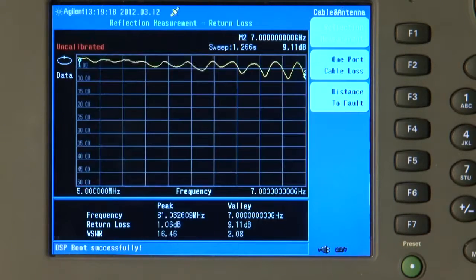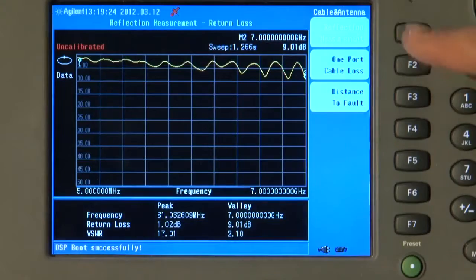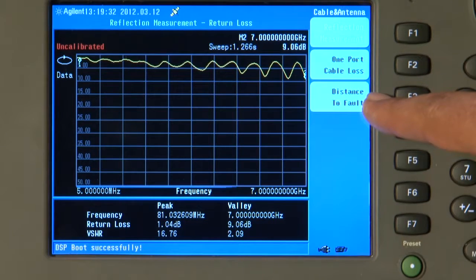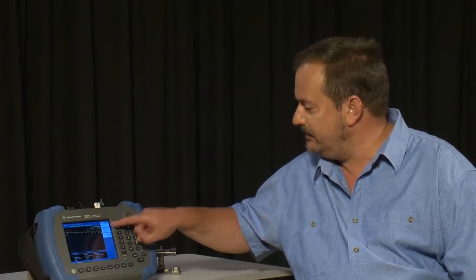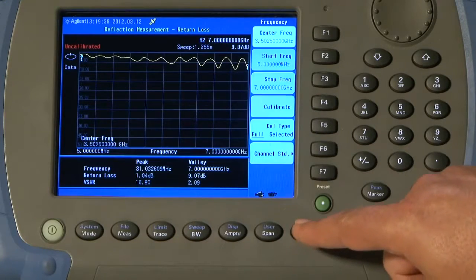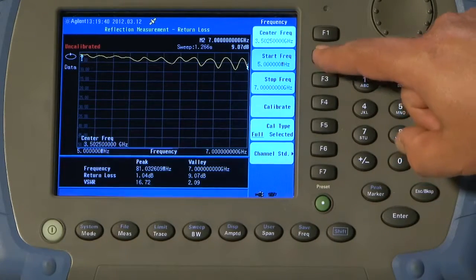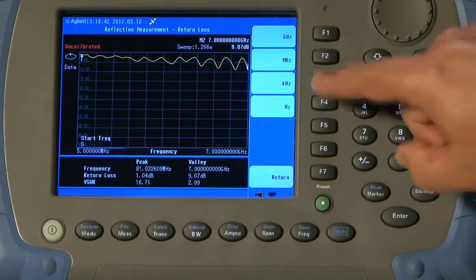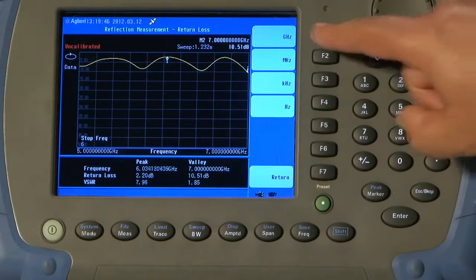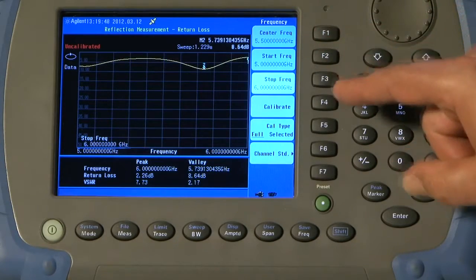You can see here the three measurements. We can make a reflection measurement, that is return loss or VSWR, a one port cable loss measurement, and distance to fault. We will start with the reflection measurement of this Wi-Fi antenna. So I will press Frequency and enter a start frequency of 5 GHz and a stop frequency of 6 GHz.